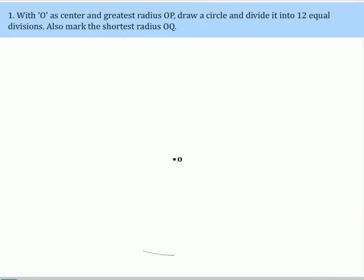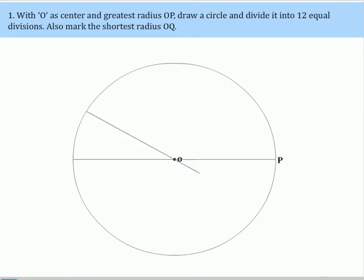With O as center and greatest radius OP, draw a circle and divide it into 12 equal divisions. Also mark the shortest radius OQ.